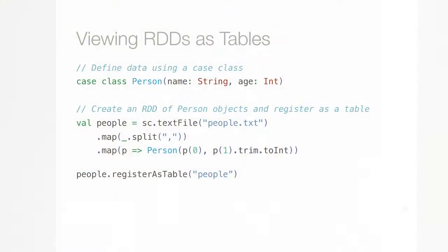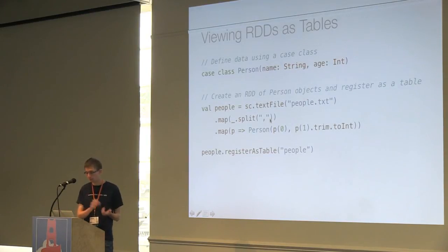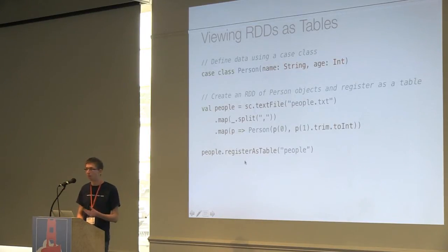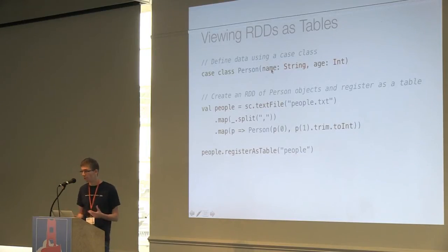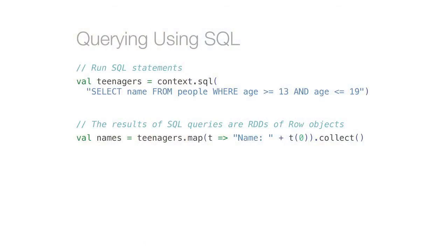One of the cool things we've done using Scala reflection is you can use SQL not just on external data sources like Hive, but also on your RDDs of Scala objects, getting a lot of the benefits of automatic optimization. Here's how it works: you define your data types — for example, a class named Person — and construct an RDD out of them. So I'm taking a text file, splitting by commas for a name/age format, then creating a Person from it. Then I can take this set of objects and say registerAsTable and call it 'people'.